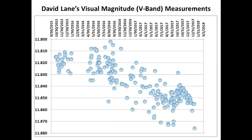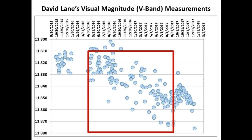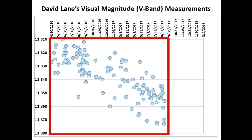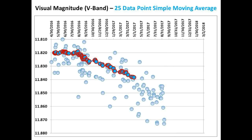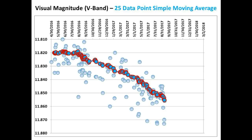Since we need a full 25 data points to start the simple moving average, let's focus on the data points enclosed by the red box. When this channel first started looking at Tabby Star back in May of 2017, this was the 25 data point simple moving average we were evaluating. We were certain at that time that the best fit curve of the long-term trend, denoted by the simple moving average curve, was an accelerating long-term dimming curve, which we extrapolated. As time went on, the simple moving average was following very closely to our extrapolated accelerating long-term dimming curve, as you can see.